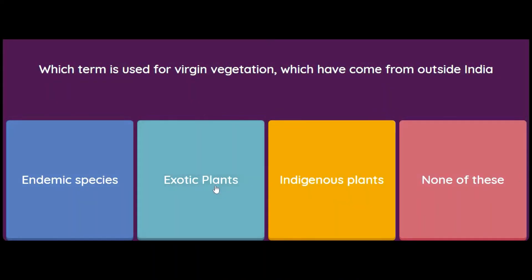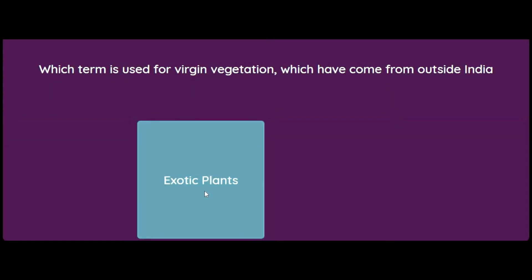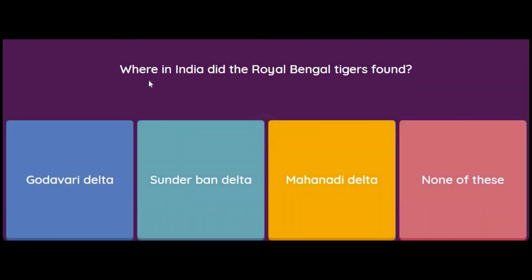So the correct answer is exotic plants. Where in India are the Royal Bengal Tigers found — Godavari delta, Sundarbann delta, Mahanadi delta, or none of these? That's very easy — it's Sundarbann delta.